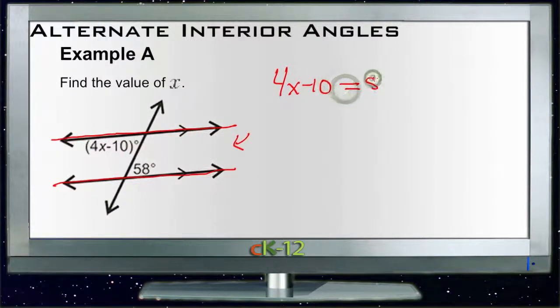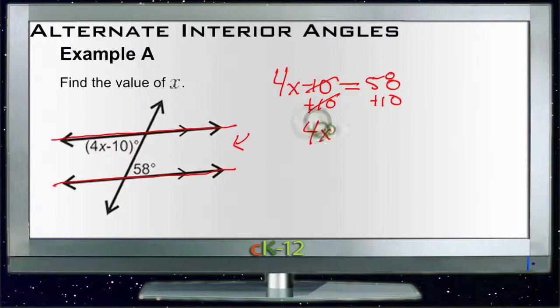So we're just going to set that up like an algebra equation. Now we just need to solve for x. We'll first add 10 to both sides. Cancel out that 10 on the left. We'll have 4x equals 58 plus 10 is 68.